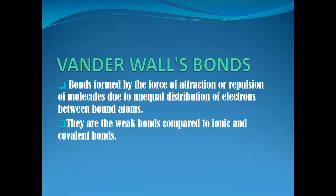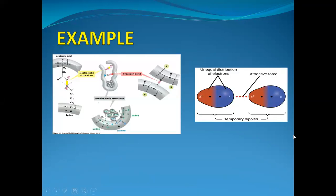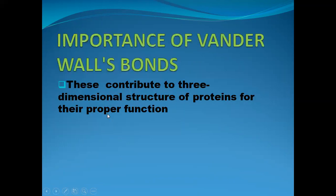Next is Van der Waals bonds. These bonds are formed by the force of attraction or repulsion of molecules due to unequal distribution of electrons between the bound atoms. They are weak bonds compared to ionic and covalent bonds. The unequal distribution of electrons leads to partial negative charge on one side and partial positive charge on the other, forming Van der Waals forces. Here you can see a polypeptide chain of an amino acid with Van der Waals forces acting. Van der Waals bonds are important to maintain the three-dimensional structure of proteins for their proper function.